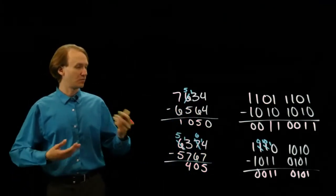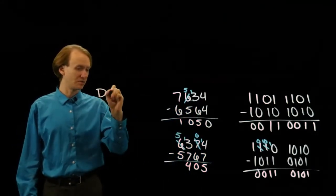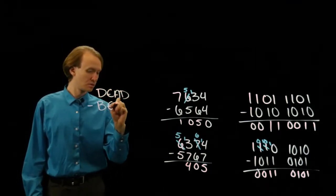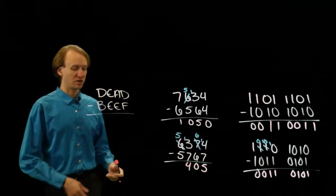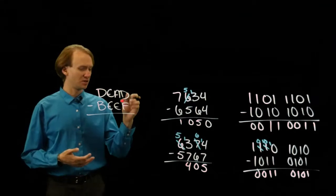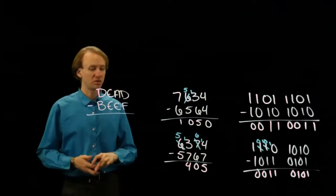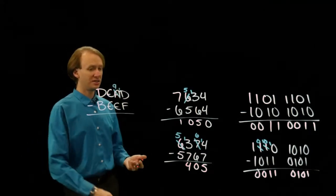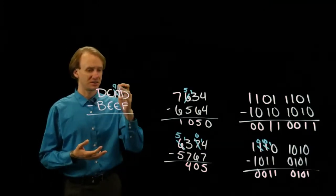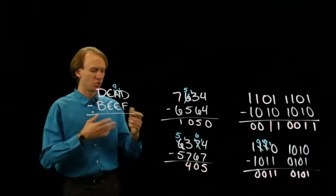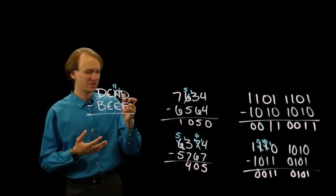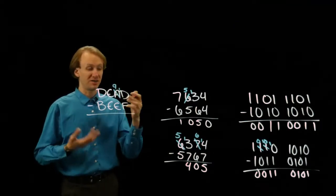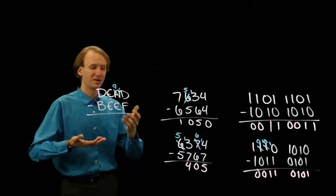If I do something in hexadecimal, I might subtract B from DEAD. So D is less than F, so I'll need to go borrow something. A minus 1 is 9. Now I have 1D. So I can say this is 16 plus 13, which is 29. 29 minus 15 is 14, and 14 is E. Or I can do 10 minus F is 1, and 1 plus D is E.